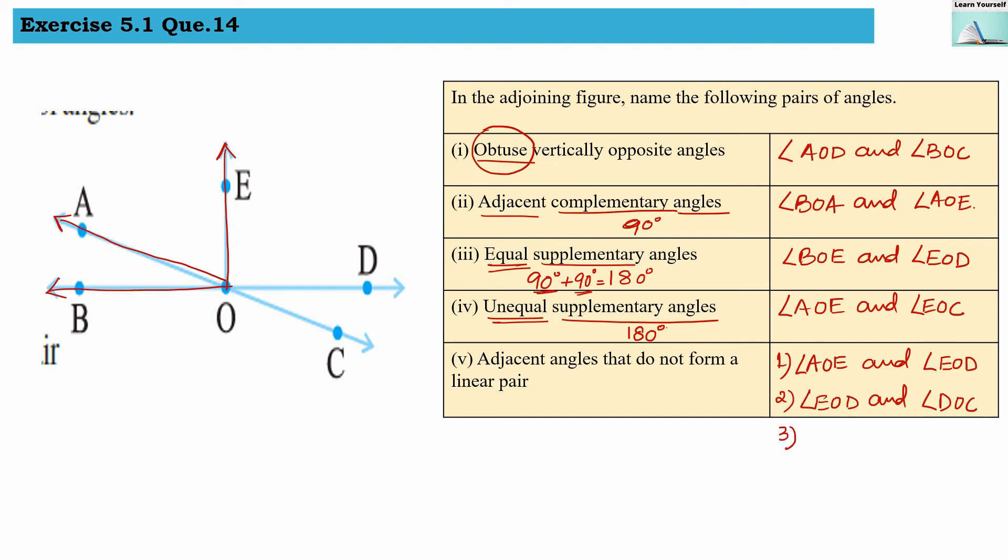Third pair of adjacent angles are angle EOA, this is the first angle, and second angle is angle AOB. So these two pairs are also adjacent angles but they are also not forming linear pair.